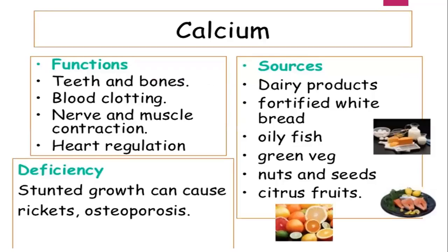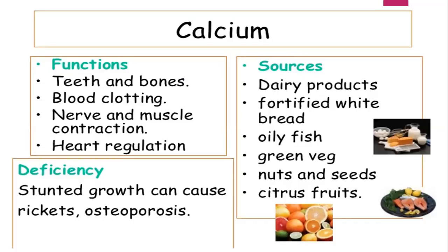Calcium is needed for hardening our bones and teeth. If a child does not get enough calcium, his bones become soft. The important function of calcium is for teeth and bones. Deficiency of calcium can cause stunted growth and rickets. Sources include dairy products, fortified white bread, especially milk, and citrus foods. You should take more intake to get the nutrients.